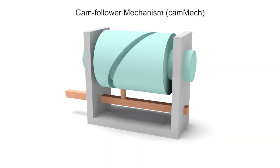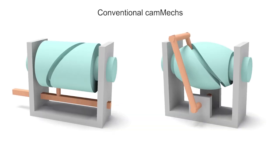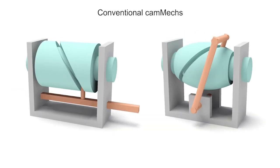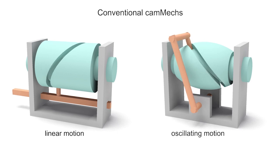A spatial cam follower mechanism consists of a 3D cam, a follower, and a support frame. Conventional cam follower mechanisms can only output linear or oscillating motion.